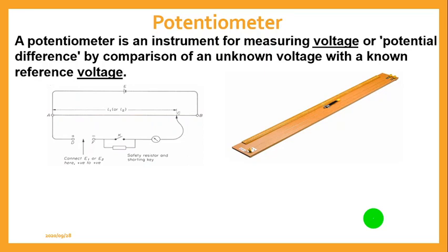So, what is a Potentiometer? A Potentiometer, just like any other electrical device we use in the laboratory, is used to determine the value of voltage or potential difference by making a comparison of an unknown voltage to a known one. The known voltage we make use of is what we refer to as a reference voltage. The two images above represent the Potentiometer.